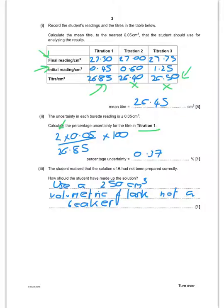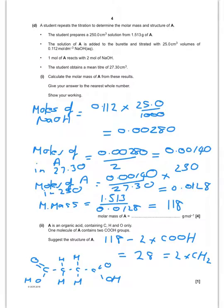How should the student have made up the solution? Well we shouldn't have used a beaker of course. We should have used a 250 centimeter cubed volumetric flask.